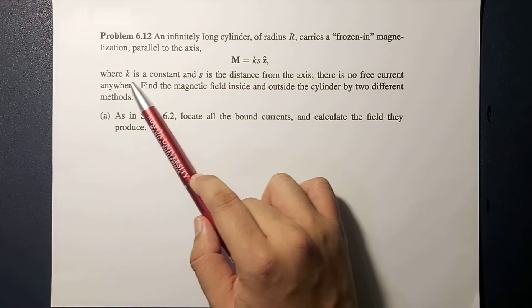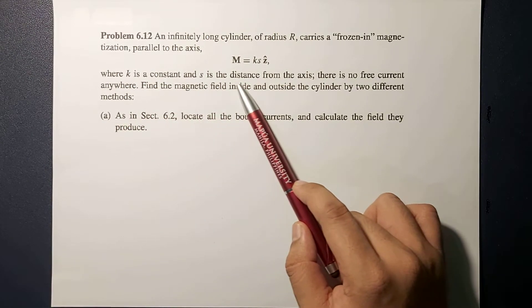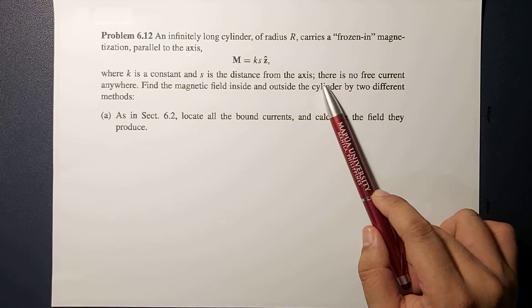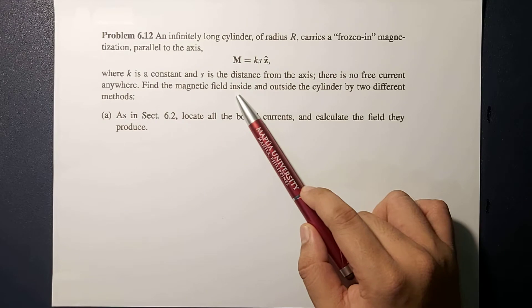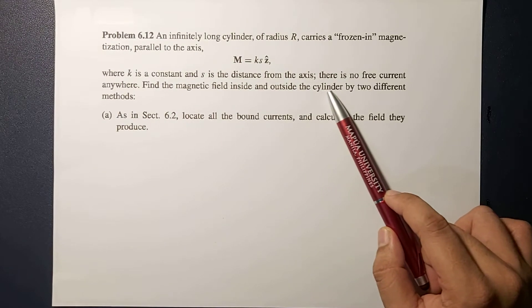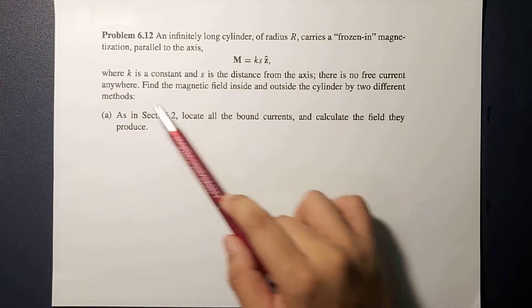Where K is a constant and S is the distance from the axis. There is no free current anywhere. Find the magnetic field inside and outside the cylinder by two different methods.